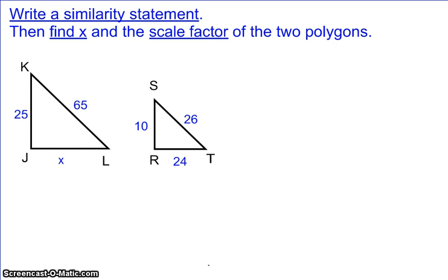When they ask you to write a similarity statement, it's actually a pretty simple thing to do. They just want you to formalize what vertices in one triangle match with the vertices in the other. So you're allowed to name your first triangle whatever you want. In this case, I'm going to name it J-K-L.